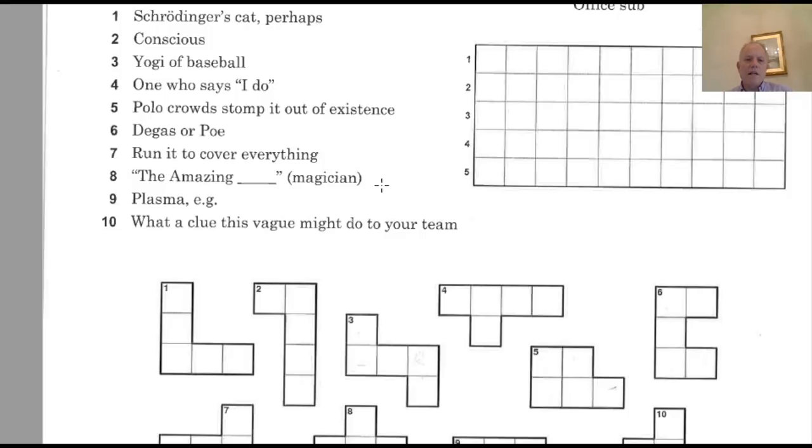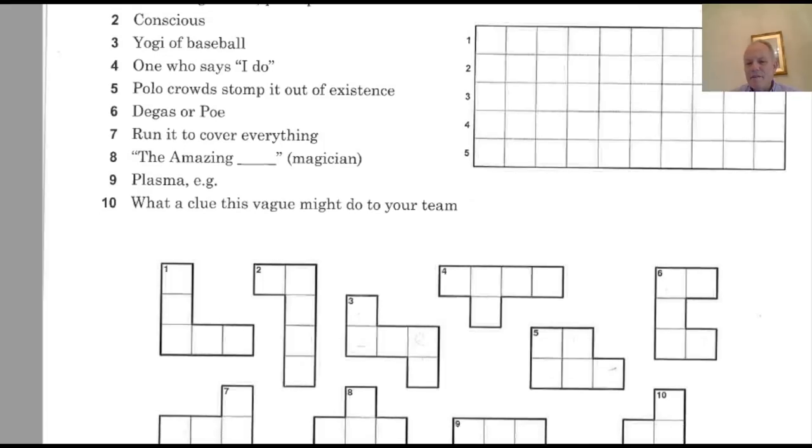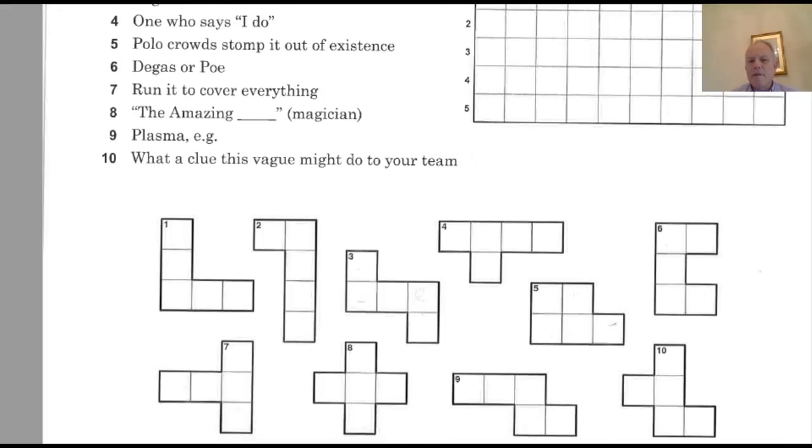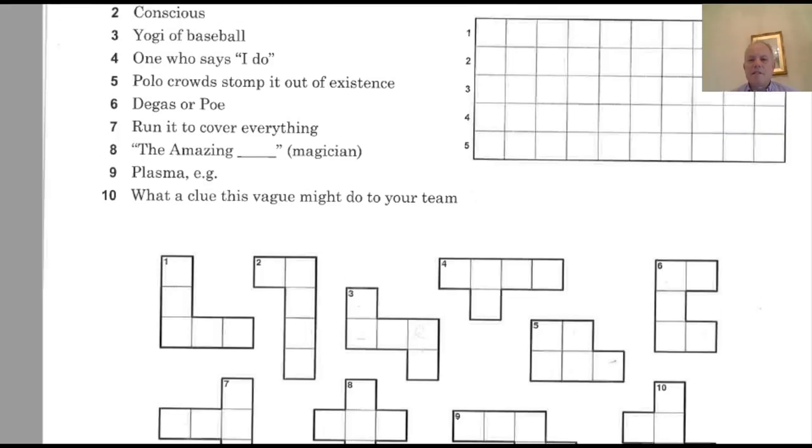Now, number nine, plasma e.g. Could that be a serum or blood? No, I don't know. And ten, what a clue this vague might do to your team. Annoy? Something like that? Not sure. So let's try and remember those plasma and what a clue this vague might do to your team. Quick look at the row clues because they'll help us fill things in.